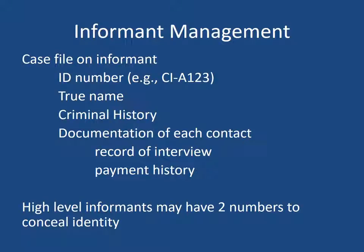In high-level cases I have seen where they have given an informant two numbers to conceal their identity. There could be a concern with this, however — if you're using the same informant but two numbers to establish probable cause, it may appear to a judge that you have two different informants, which means it appears to be more credible. You need to at least identify to the judge that these two informant numbers identify the same informant.